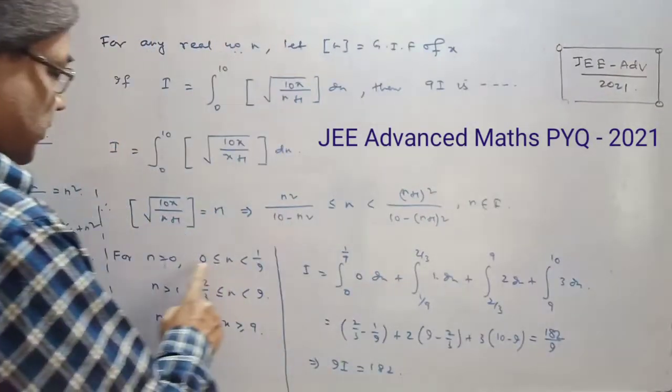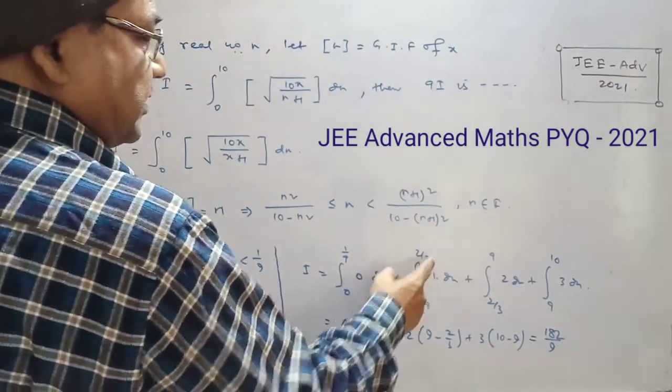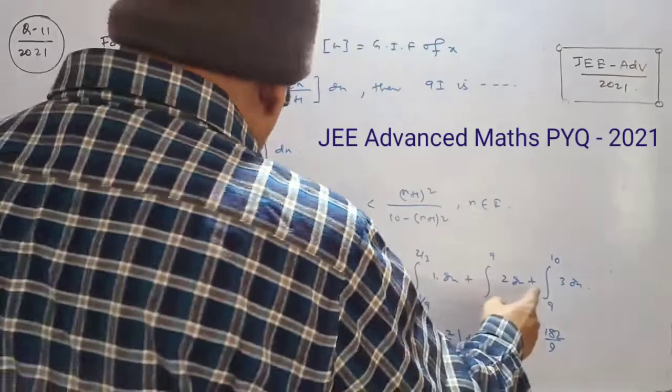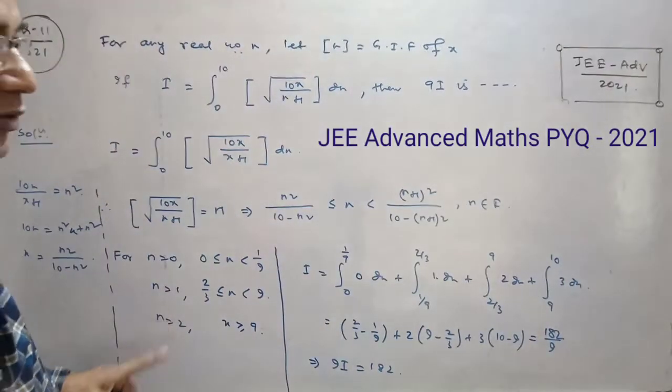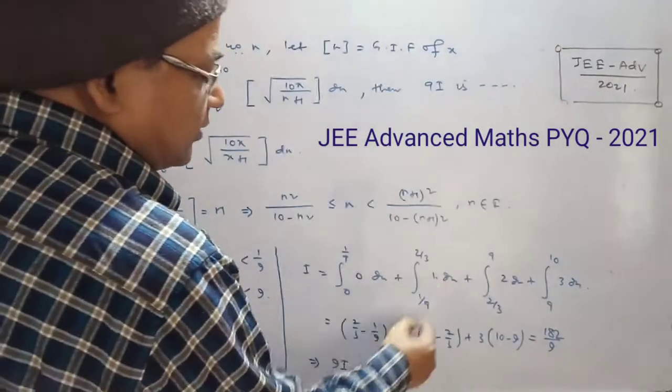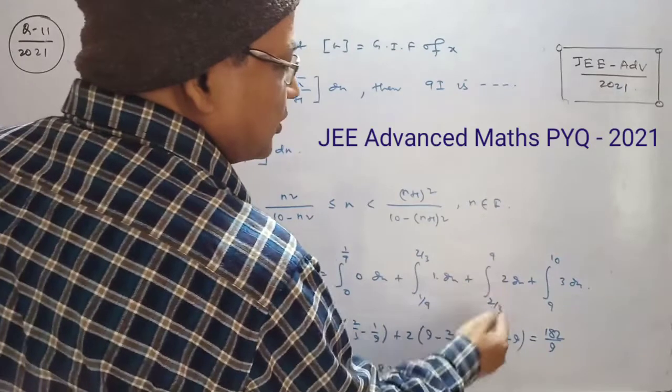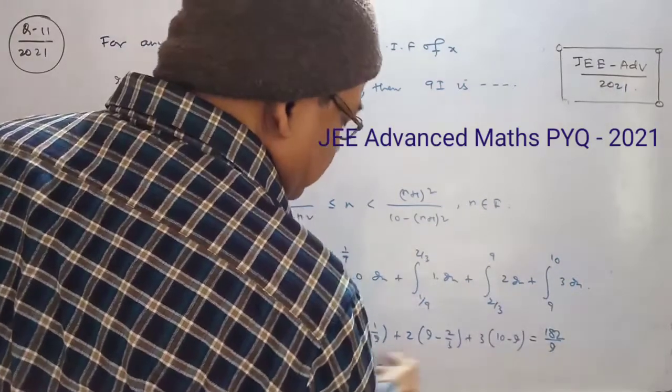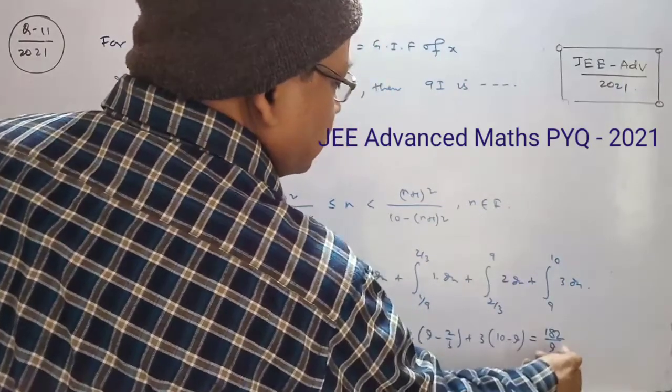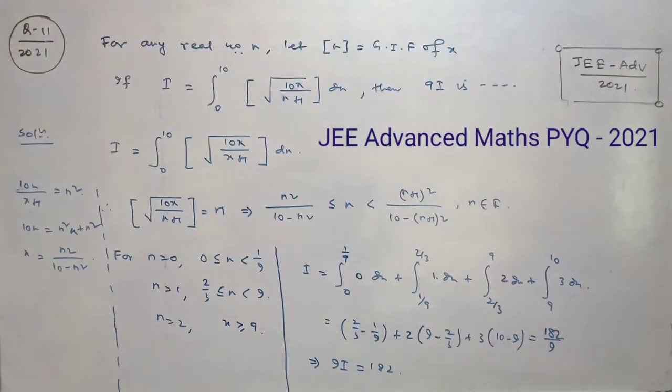Clear, so this is 0, 1 by 9, 0, 1 by 9, 2 by 3, 1, 2 by 3, 1. So like this, this is all values. This is 0, so this is 1 into 2 by 3 minus 1 by 9, 2 into this, 3 into 10 minus 9, it is going to simplify, 182 by 9, cross multiply, 9i equal to 182.